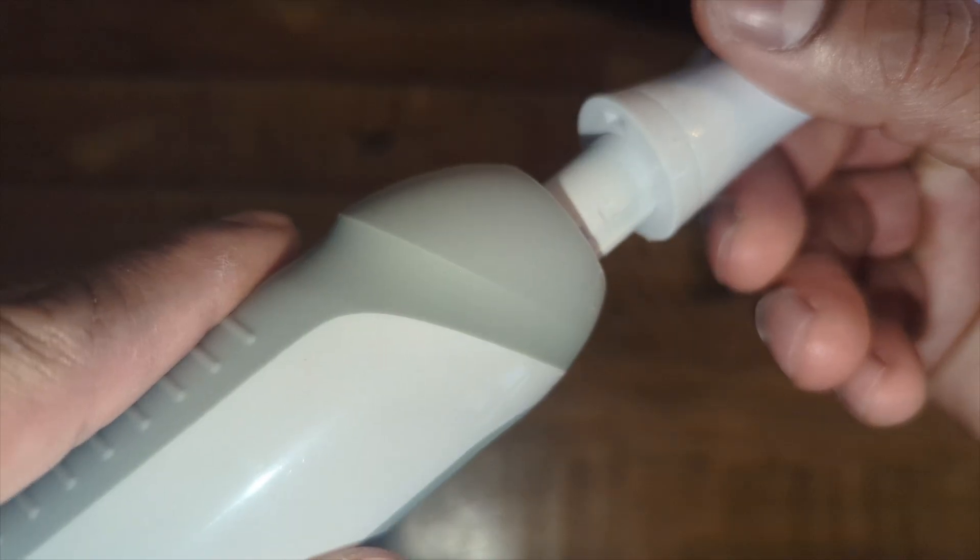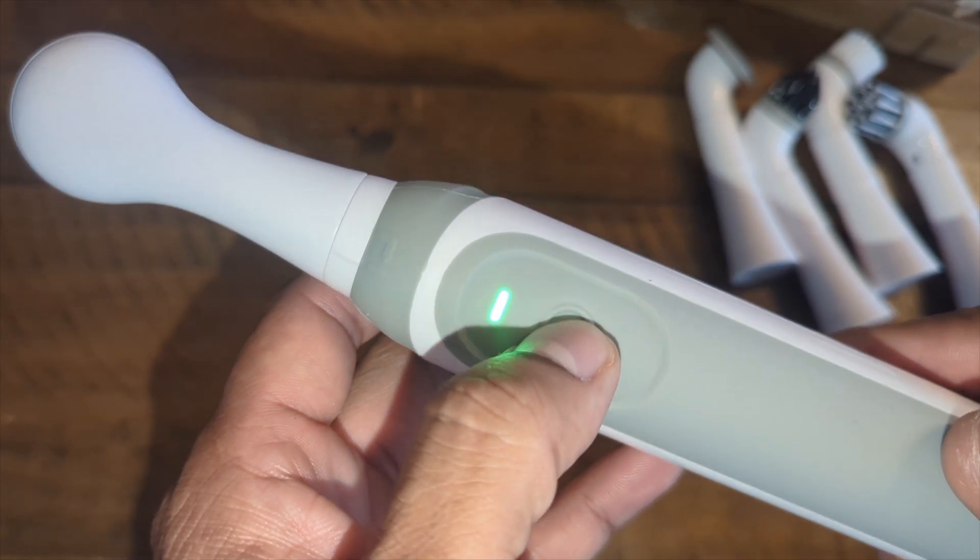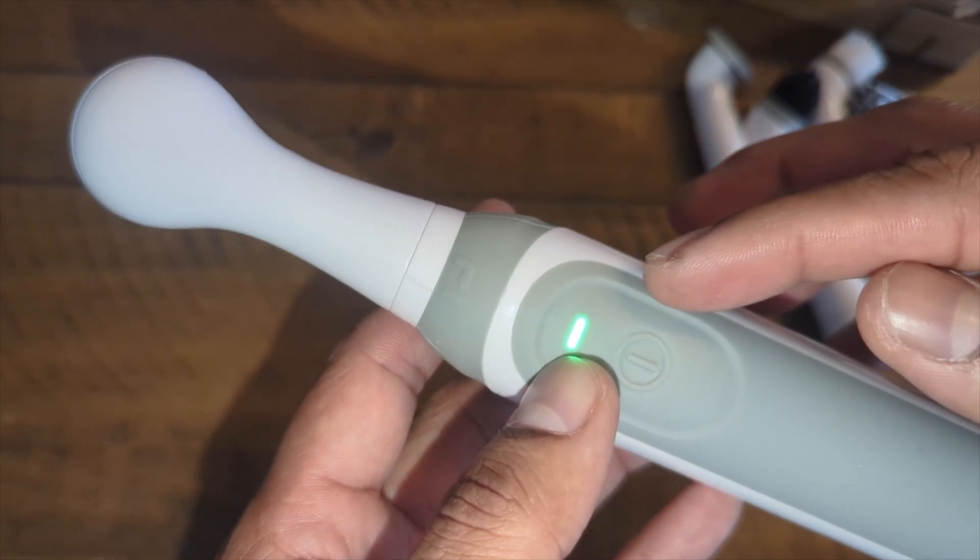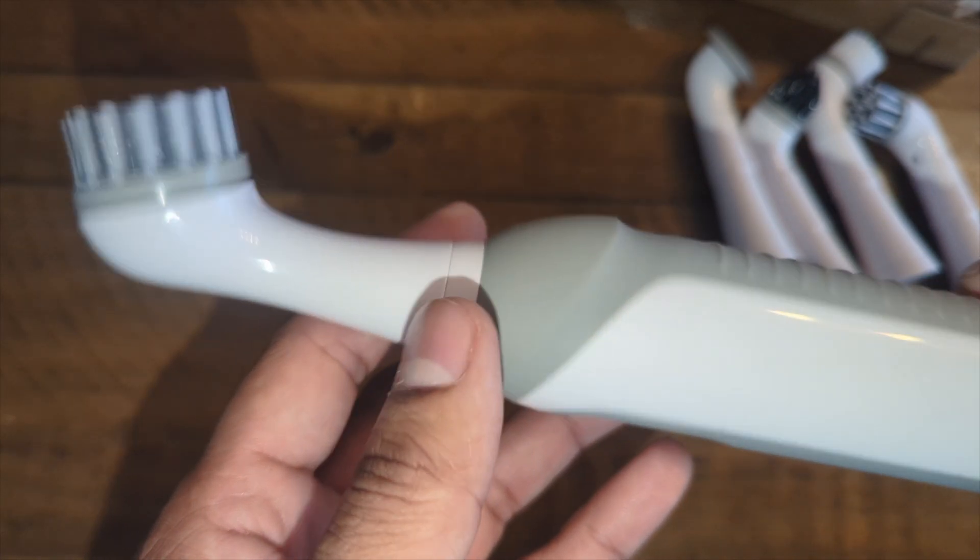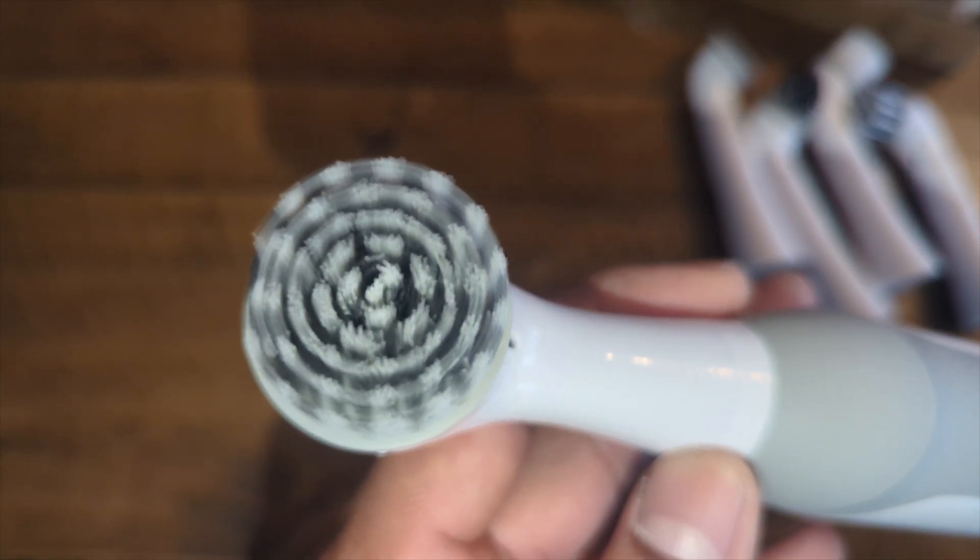Fast charging - just twist and lock it. The power button is right here. It shows green when it's fully charged, yellow when it needs charging, and red when it's charging. We're going to put this to the test.